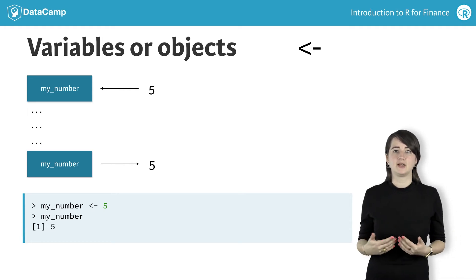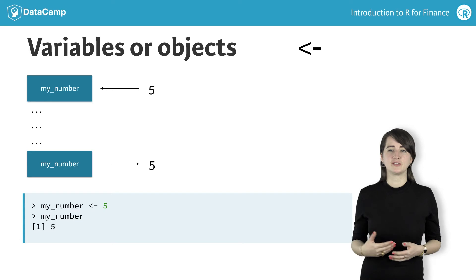When you want to access the data in my_number, type in its name, press enter again, and R returns 5.